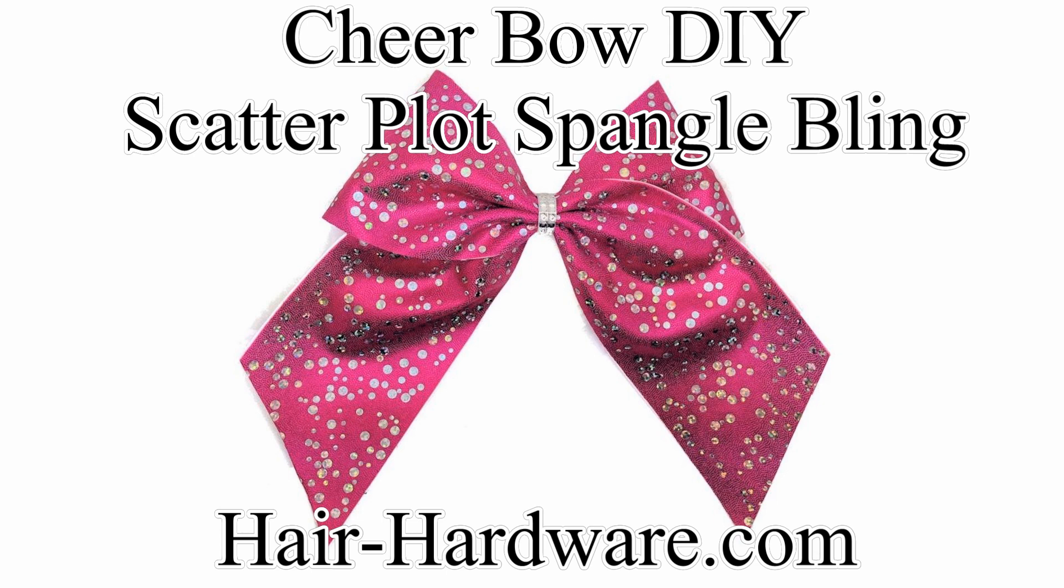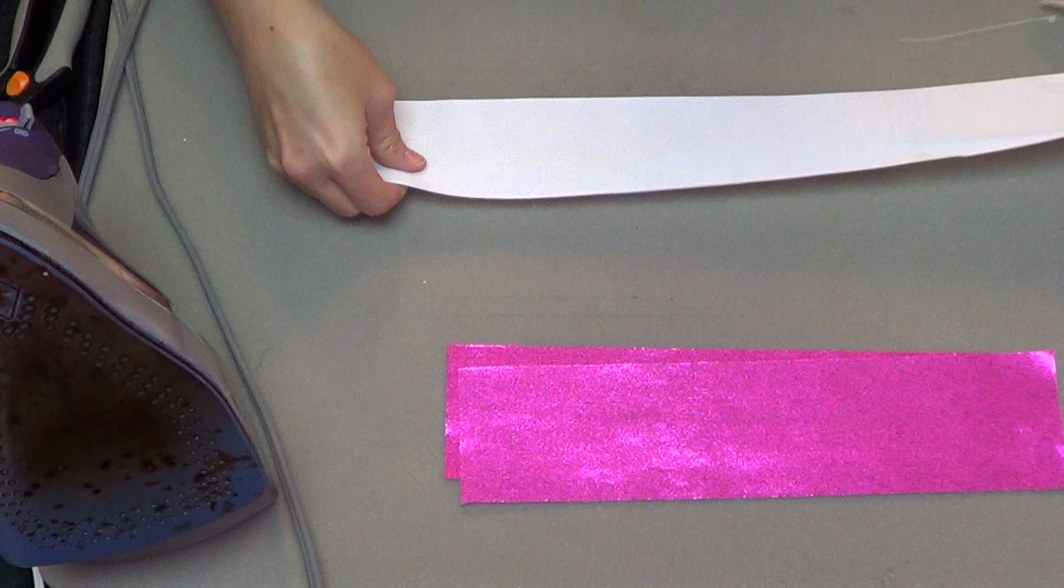Hey everybody, it's Laura from Hair Hardware, and today I'm going to show you how I made this really pretty pink cheer bow using our new scatter plot spangle bow strips and a gem center adhesive wrap.